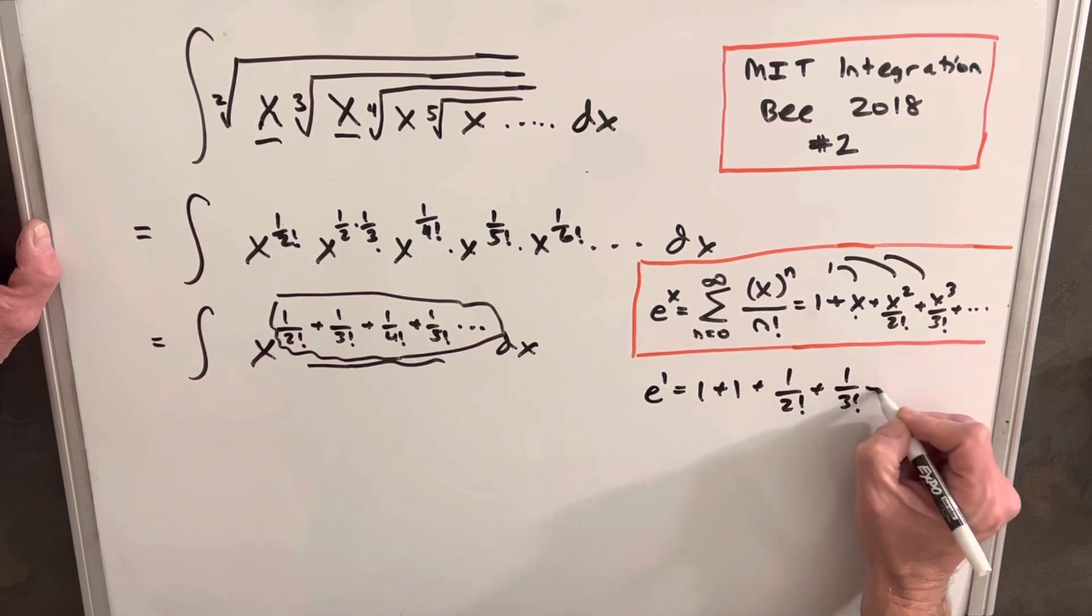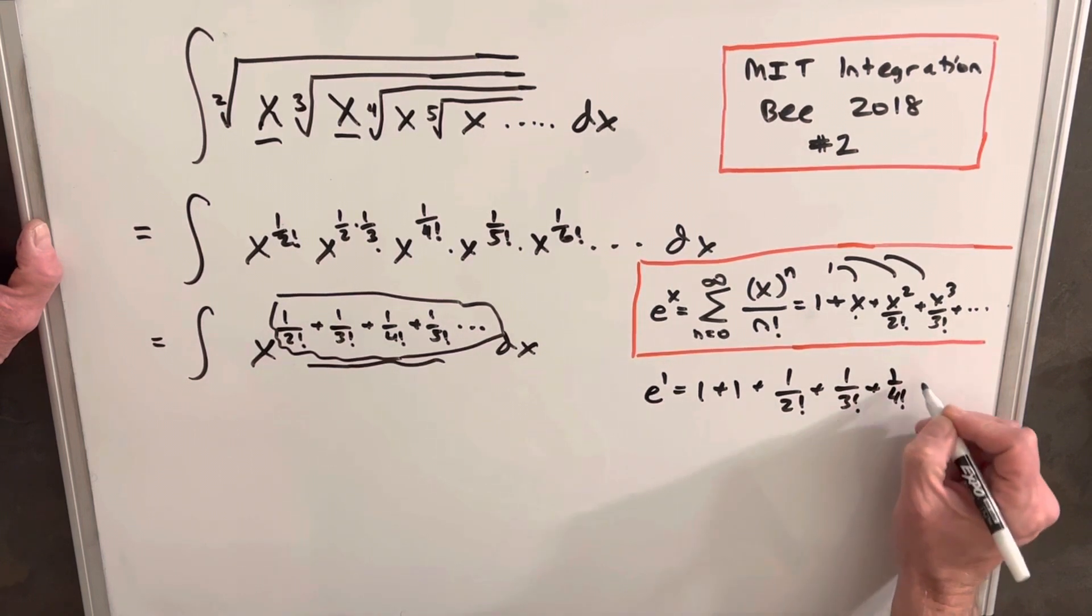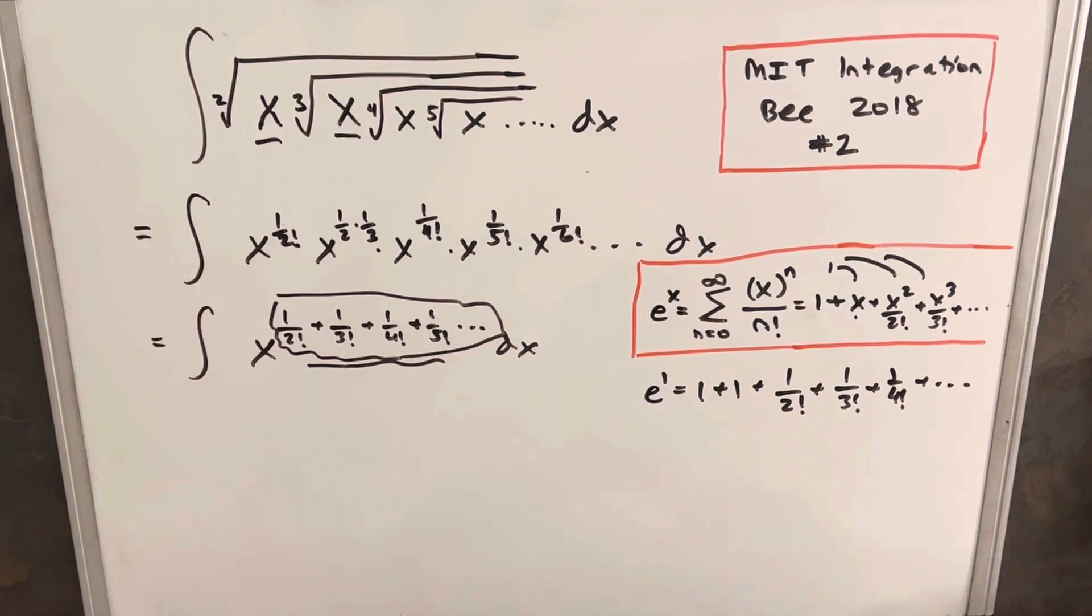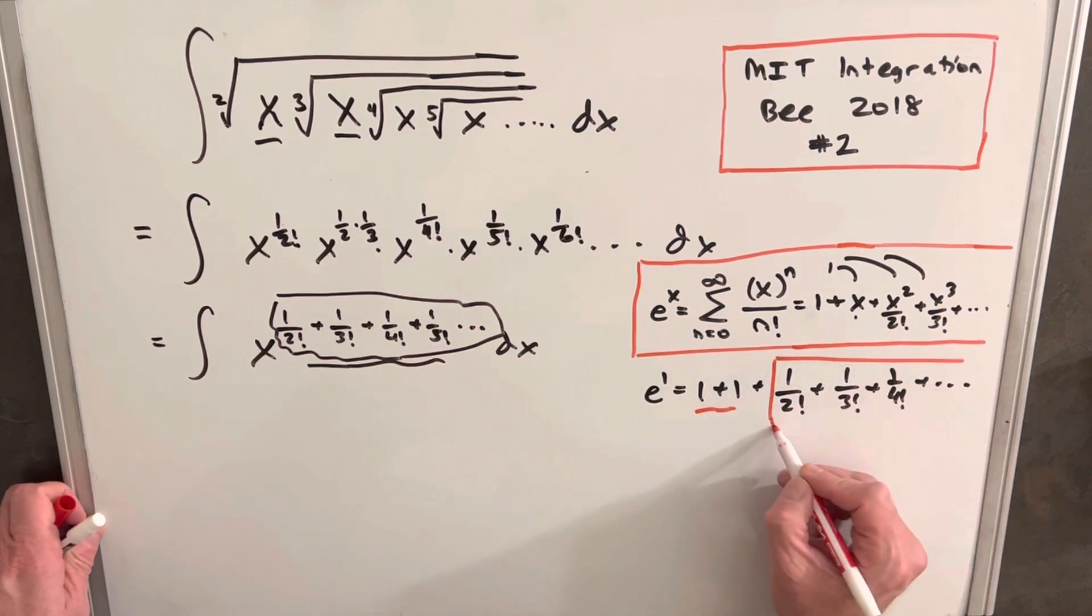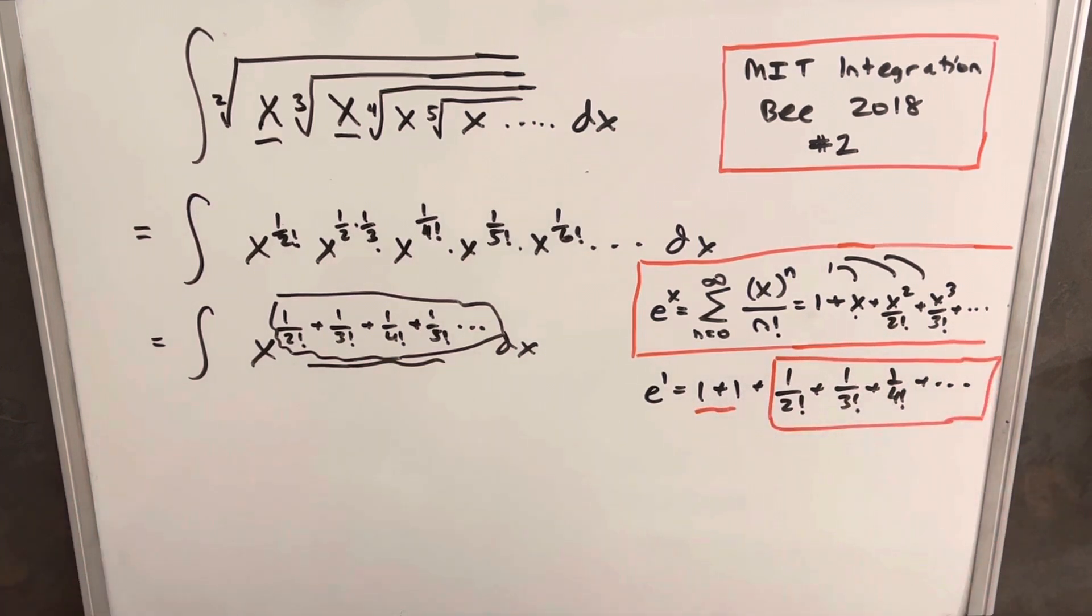And then now you notice we have really the exact same thing we have over here, but only the end part. We don't have these two 1s here, but we have all of this as the series we want.